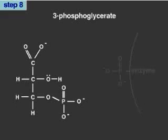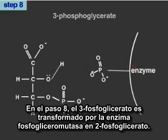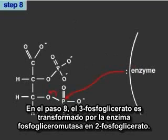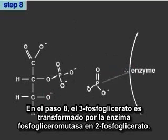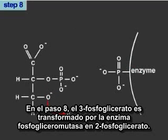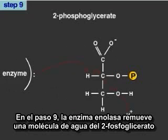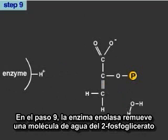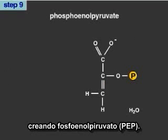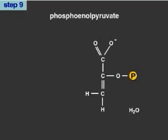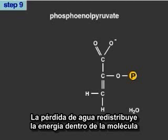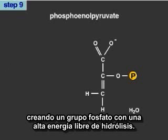In the 8th step, 3-phosphoglycerate, which has a relatively low free energy of hydrolysis, is transformed by the enzyme phosphoglycerate mutase into 2-phosphoglycerate. In the 9th step, the enzyme enolase removes a water molecule from 2-phosphoglycerate, creating phosphoenolpyruvate. The loss of water redistributes energy within the molecule, creating a phosphate group with an extremely high free energy of hydrolysis.